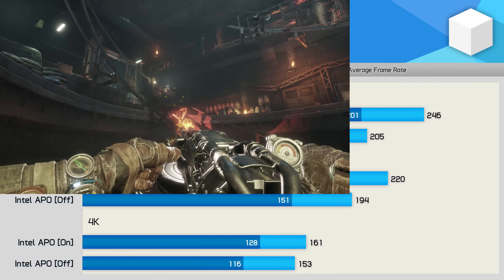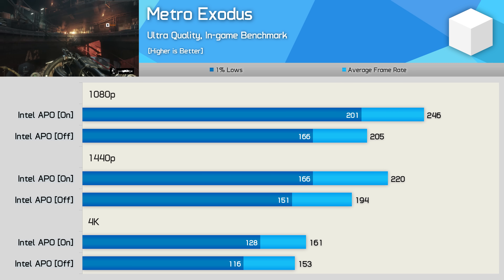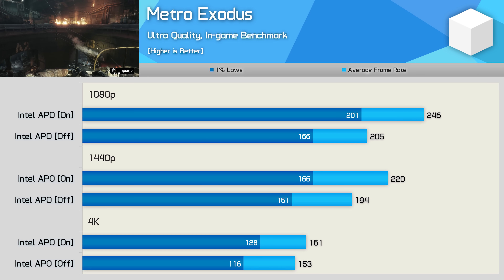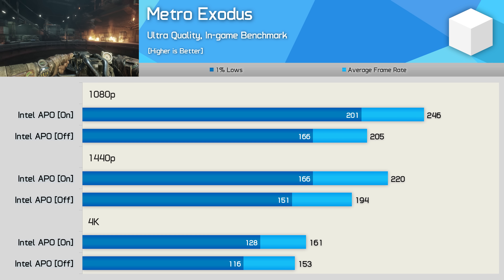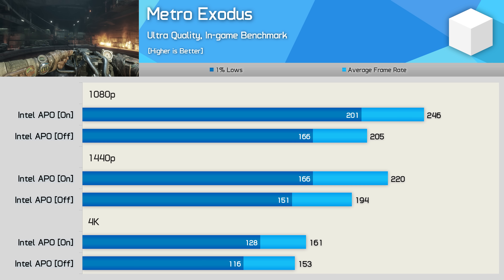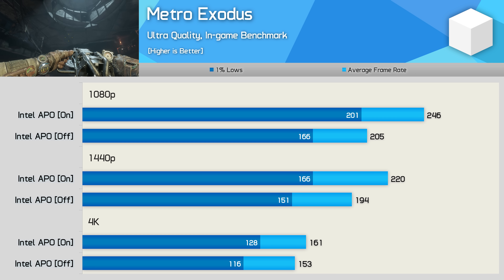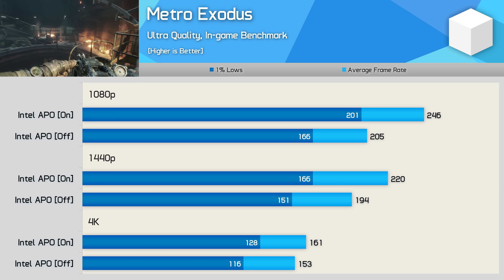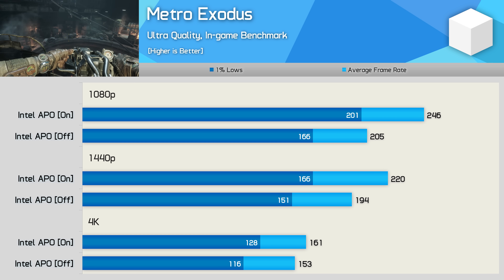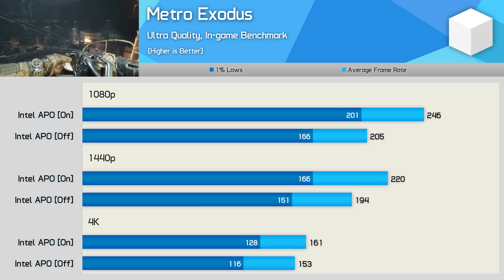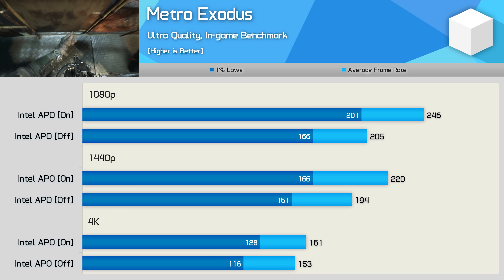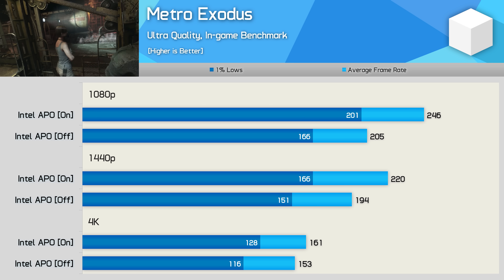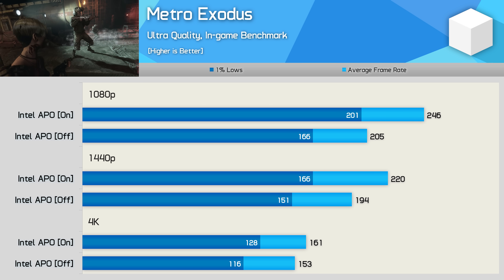I wanted to take a look at real in-game performance, just to make sure Intel wasn't optimizing performance for the built-in benchmark. Thankfully, that's not the case — in fact, we saw much larger performance gains when actually playing the game. At 1080p, enabling APO provided an additional 20% performance, hitting 246 FPS on average, a remarkable improvement. Even at 1440p, we're looking at a 13% boost, and at 4K we're still in for a nice 5% boost. A fantastic set of results.